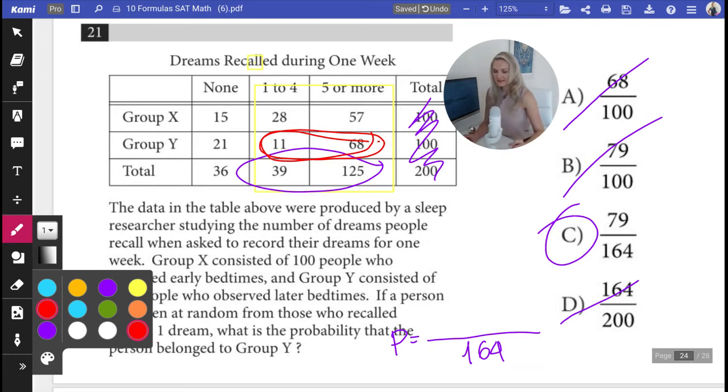11 plus 68, that is indeed 79. So this works. This is C.